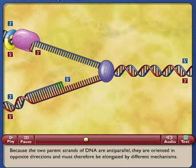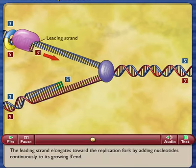Because the two parent strands of DNA are anti-parallel, they are oriented in opposite directions and must therefore be elongated by different mechanisms. The leading strand elongates toward the replication fork by adding nucleotides continuously to its growing 3' end.